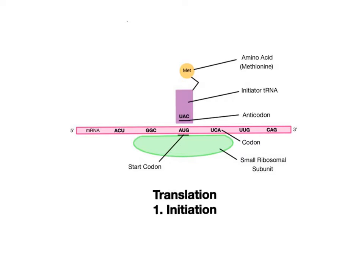As the anticodon UAC bonds to the start codon, it tells the whole complex that protein synthesis has begun. The amino acid methionine, symbolized as MET, bound to the other end of the transfer RNA, will be the first amino acid in the polypeptide sequence. Now we're ready to finish assembling the rest of the ribosomal complex, and then translate the messenger RNA sequence, codon by codon, into the polypeptide chain.